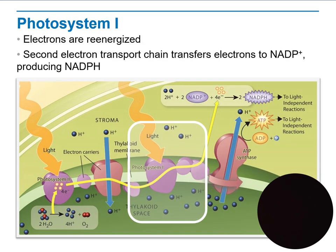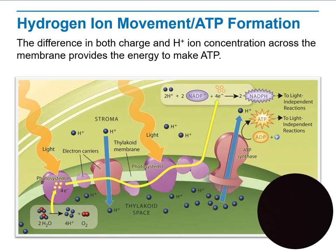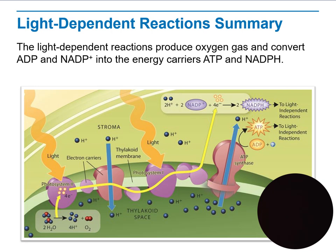In photosystem I, electrons are re-energized, and a second electron transport chain transfers electrons from NADP+ to produce NADPH. The hydrogen ion movement comes from the splitting of water, and ATP is formed from ADP. In summary, the light-dependent reaction produces oxygen gas and converts ADP and NADP+ into ATP and NADPH.